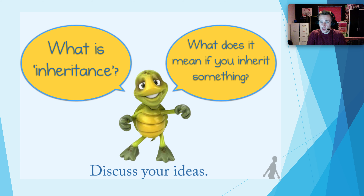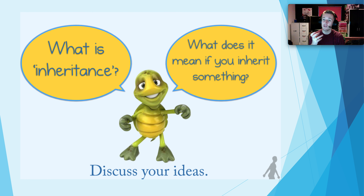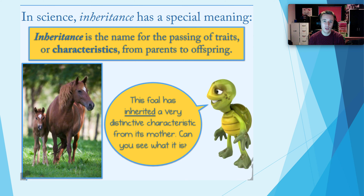Do you know what inheritance is? Well you might have heard of inheritance — for example when someone passes away you might get an inheritance, you might inherit a house or some money or some jewellery. But in terms of science that's not quite what we mean. What it does mean is to get something from someone else — we inherit it — and in terms of science we inherit from our parents and our grandparents. It's the name given for a passing of traits or characteristics from parents to their offspring.